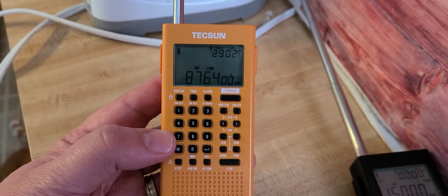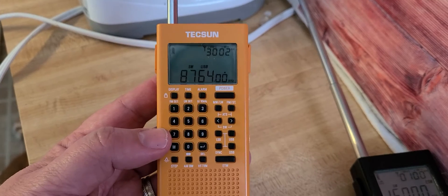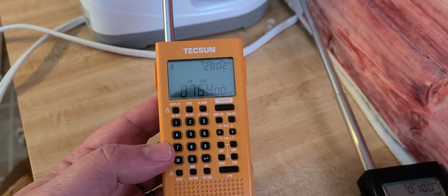So, Chesapeake, Virginia weather. Marine weather forecast at 8.764 kilohertz, upper sideband.